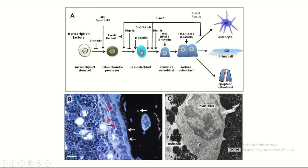The mesenchymal stem cell is converted into an osteochondral precursor, then into a pre-osteoblast, then an immature osteoblast, and finally a mature osteoblast. The fates of the mature osteoblast are: some undergo apoptosis, some are converted into lining cells, and some are converted into osteocytes. You can see the process of formation of the osteocyte from the osteoblast here.